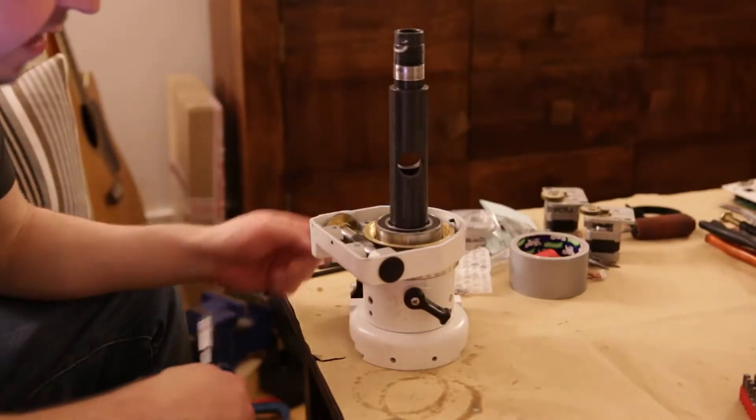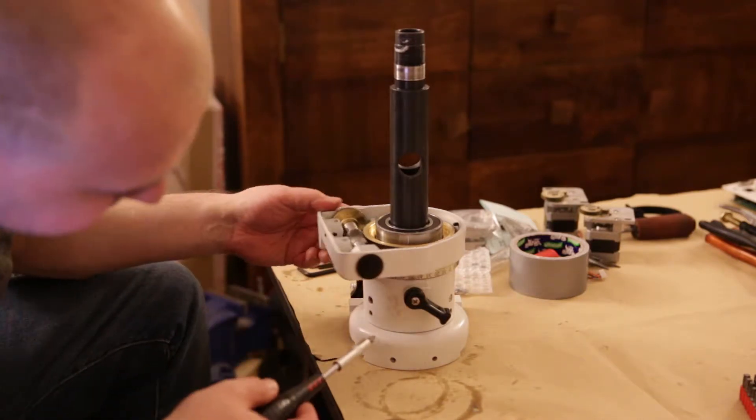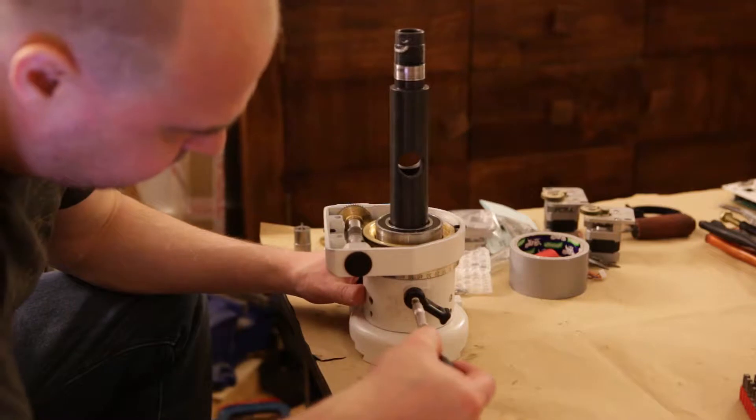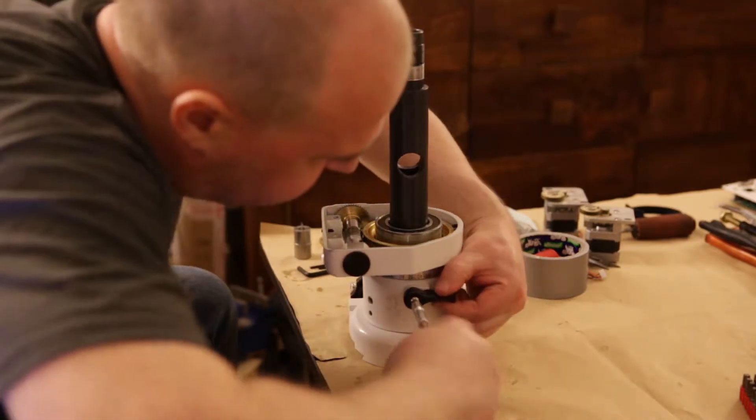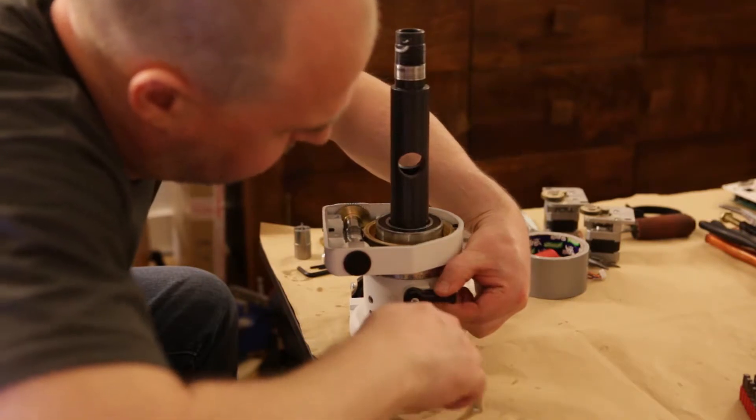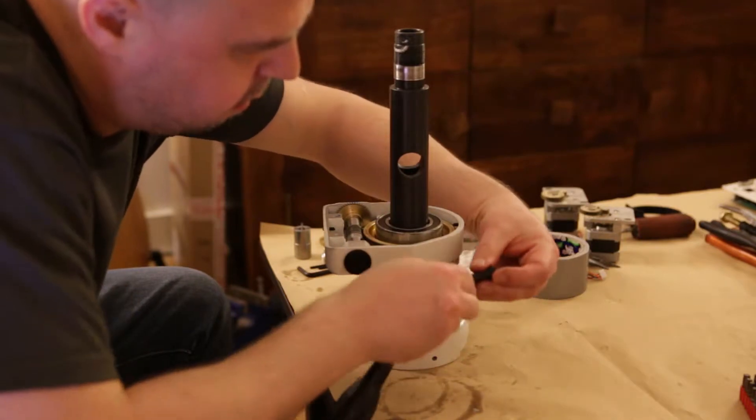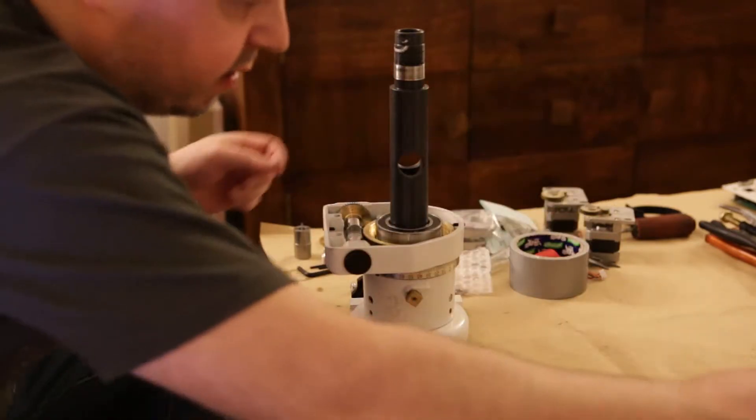All righty. Declination axis. First thing to do again is to remove the clutch lever which is held by the screw. Put the lever on one side.